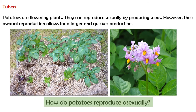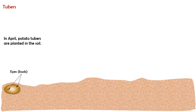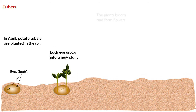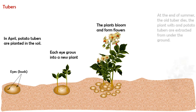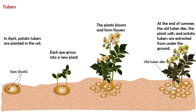How do potatoes reproduce asexually? In April, potato tubers are planted in the soil. Each eye grows into a new plant. The plants bloom and form flowers. At the end of summer, the old tuber dies, the plant wilts, and potato tubers are extracted from under the ground.